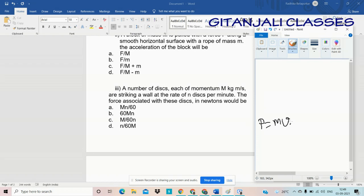Now we can say P equals mass into velocity, where P is the momentum of the whole system. What is given to us? Discs have momentum M and they are colliding at the rate N per minute. So this minute we have to convert into seconds. So I can write it as N by 60. Now as per law of conservation of momentum, the momentum can be transferred from one form to another but it cannot be destroyed or created.